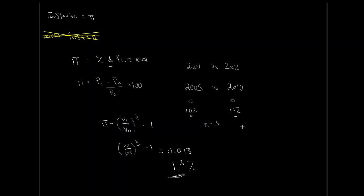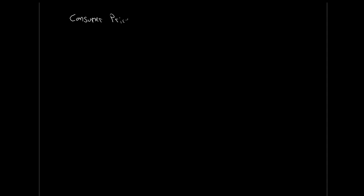How exactly do we go about tracking the price level? One way is with the GDP deflator, which we've already looked at. But really, what we want to use to evaluate our cost of living and the change in price of the stuff we buy day-to-day is going to be our Consumer Price Index.